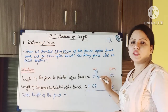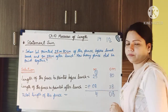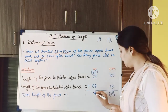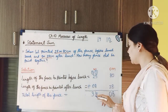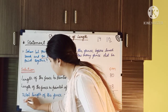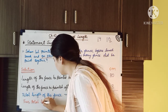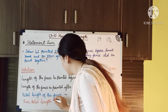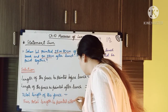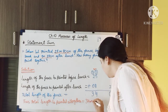Now 1 plus 5 is equal to 6, and 6 plus 8 is equal to 14. So from this 14 we write 4 here, and this 1 will carry over. Now 2 plus 1 is 3, plus 0 is 3. So now we got the total length of the fence is equal to 34 meter and 8 centimeter. Thus, total length of the fence is equal to 34 meter and 8 centimeter.